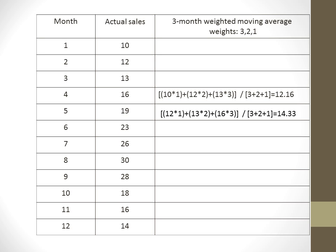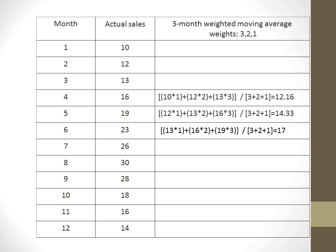To forecast month 6, we take the summation of the sales on the three previous months multiplied by its weights over the summation of its weights, and we will get the value 17, which represents the forecasted demand for month 6.